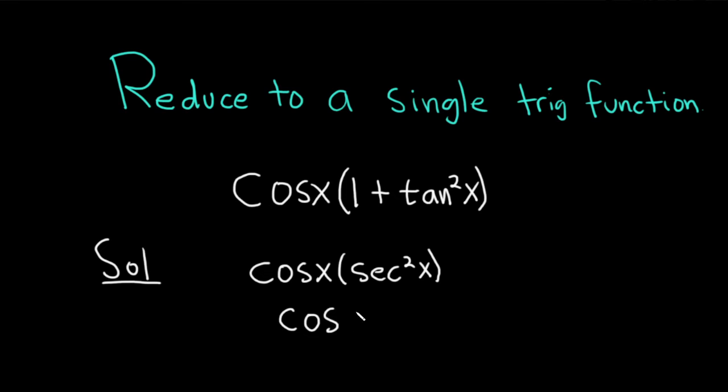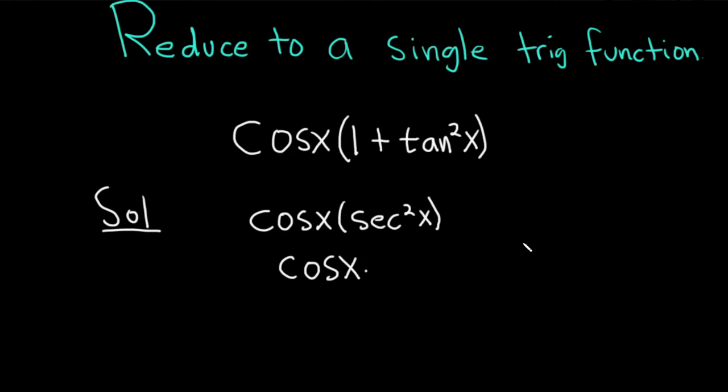So this is really cosine x times, and then secant is 1 over cosine. This will be 1 over cosine squared x.